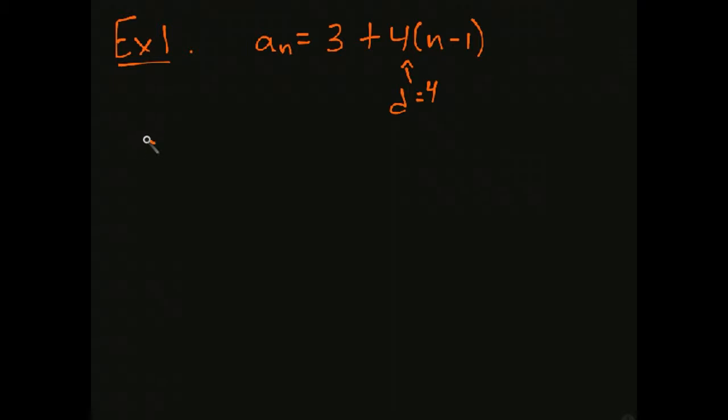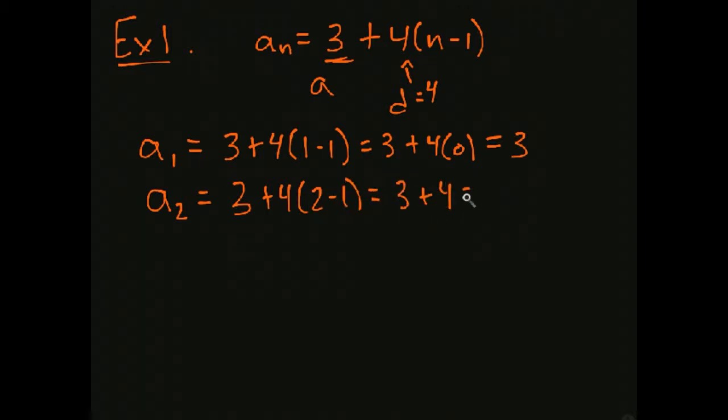Well, according to the formula we just talked about, the common difference is 4. Let's look at that in play. a1, what's the first term? Well, it's supposed to be 3 plus 4 times 1 minus 1, or 3 plus 4 times 0, so that's 3. So this is our a, just like the formula says, or our first term. Then we have 3 plus 4 times 2 minus 1, 3 plus 4, so that's 7.